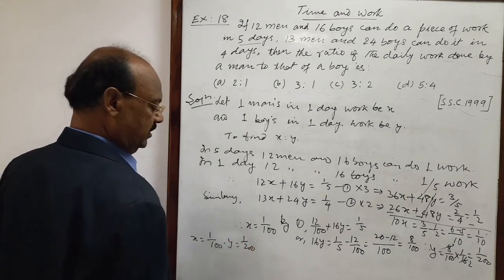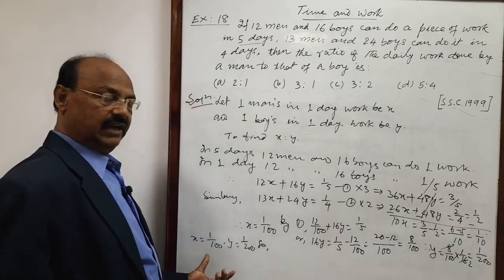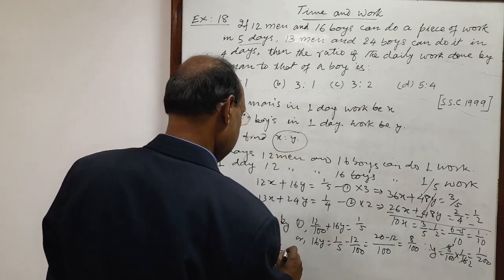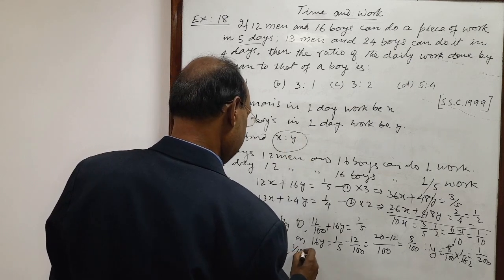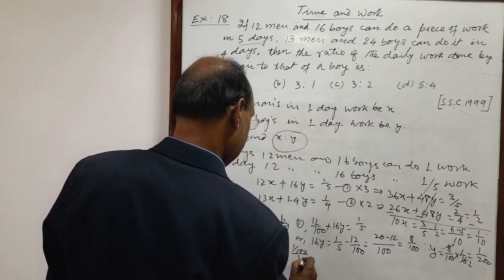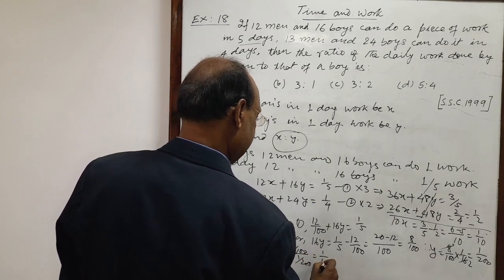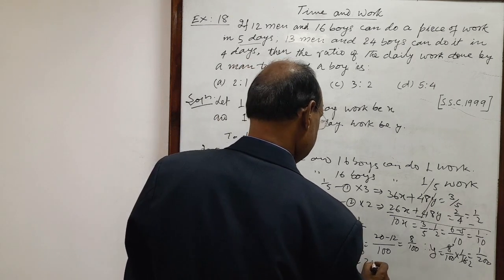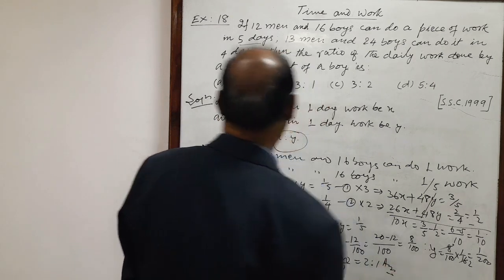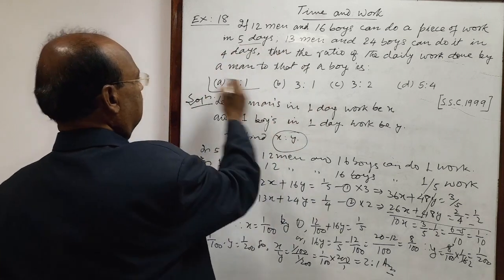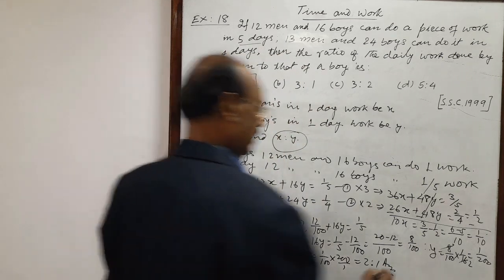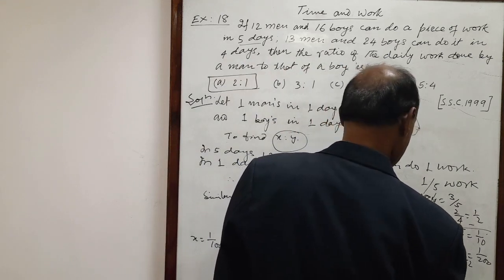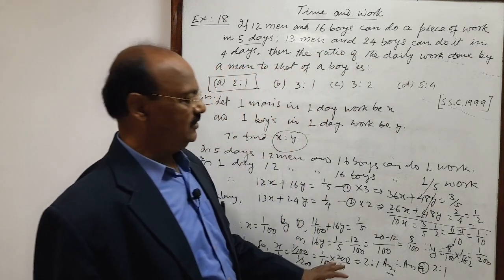So Y equals 8 by 100 into 1 by 16, which equals 1 by 200. Therefore, X by Y equals 1 by 100 divided by 1 by 200, which is 1 by 100 into 200 by 1, and this equals 2 is to 1. This is the answer. So the correct option is A, meaning 2 is to 1. This is the solution.